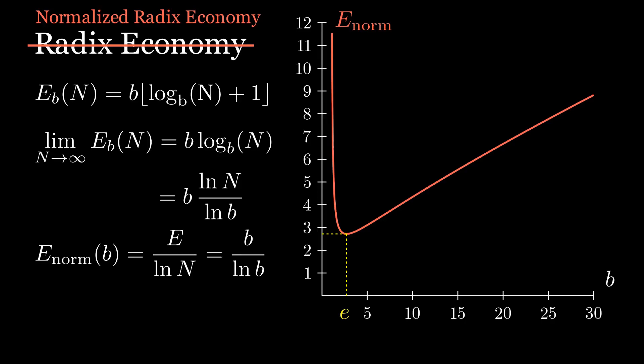Bases can be any number, but it's a lot more convenient if they're integers, so the best radix economy for an integer base is base 3. But that seems kind of strange. Base 3 is the most efficient base. It sure doesn't look like it.